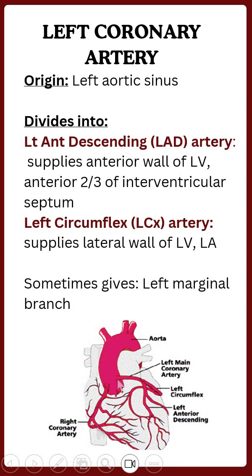Now the left coronary artery — it arises from the left aortic sinus. It is divided into the left anterior descending artery and the left circumflex artery. Circumflex artery means it wraps around and curves around the heart. The left anterior descending artery supplies the anterior wall of the left ventricle and the anterior two-thirds of the interventricular septum. The left circumflex artery supplies the lateral wall of the left ventricle and the left atrium, and sometimes gives the left marginal branch.